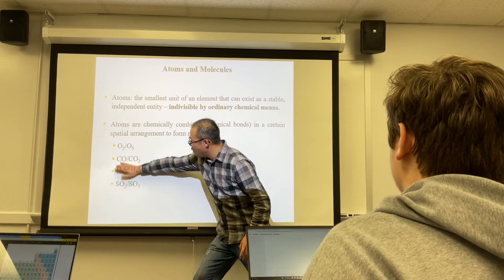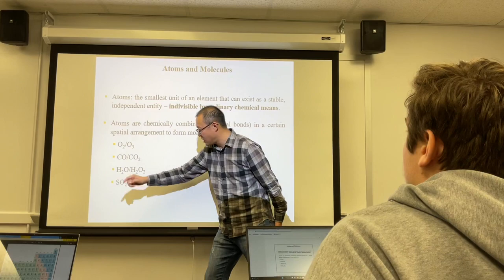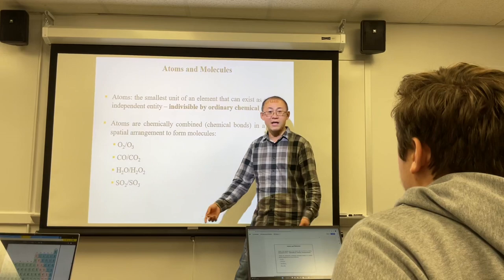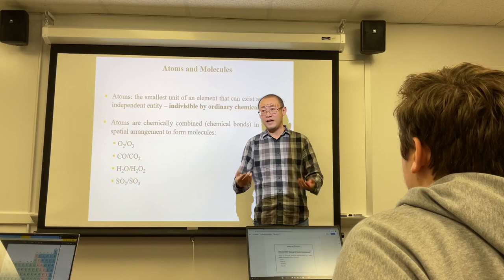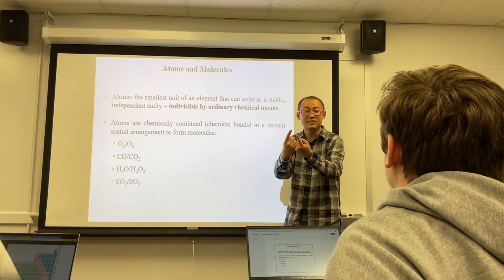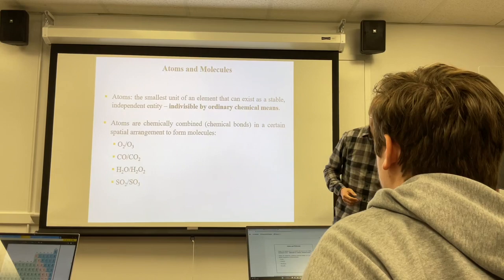Water, carbon monoxide, and sulfur dioxide are compounds because they have two types of atoms — for example, sulfur atoms and oxygen atoms, or hydrogen atoms and oxygen atoms. Oxygen (O₂) and ozone (O₃) are elements because they only contain one type of atom — oxygen — even though they have different numbers. The type is what matters.